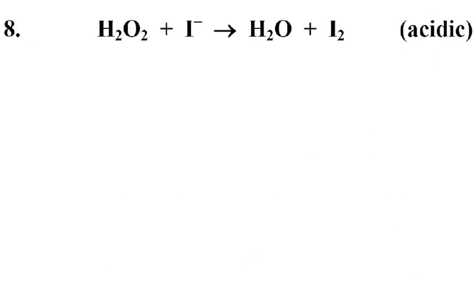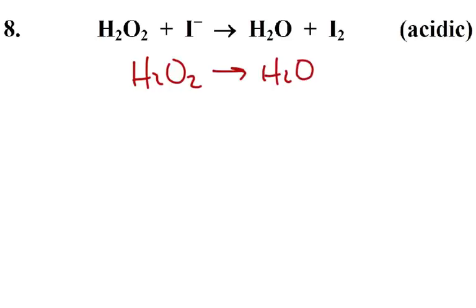Let's try the next problem. Here we have peroxide and iodide turning into water and iodine. It's kind of obvious that our peroxide is going to turn to water, and our iodide will turn into iodine. For the peroxide half-reaction, we're going to balance everything except for oxygens and hydrogens first, and so we're done with that step.